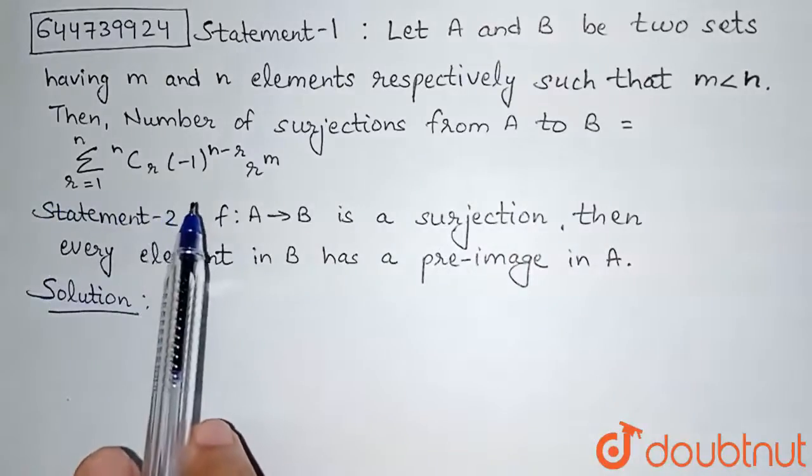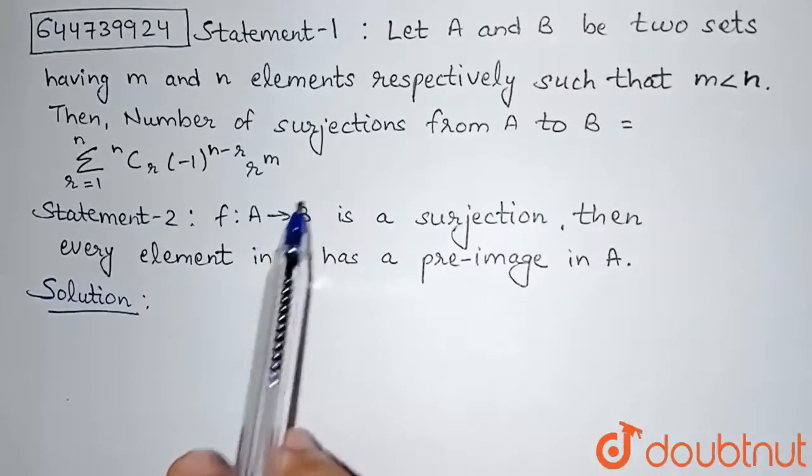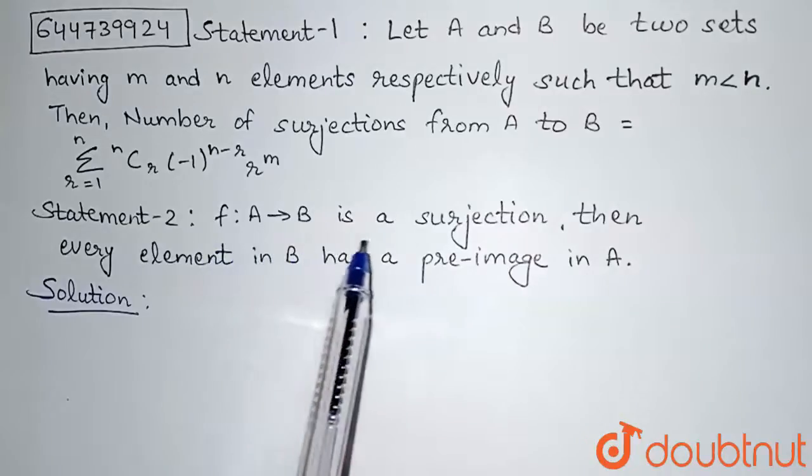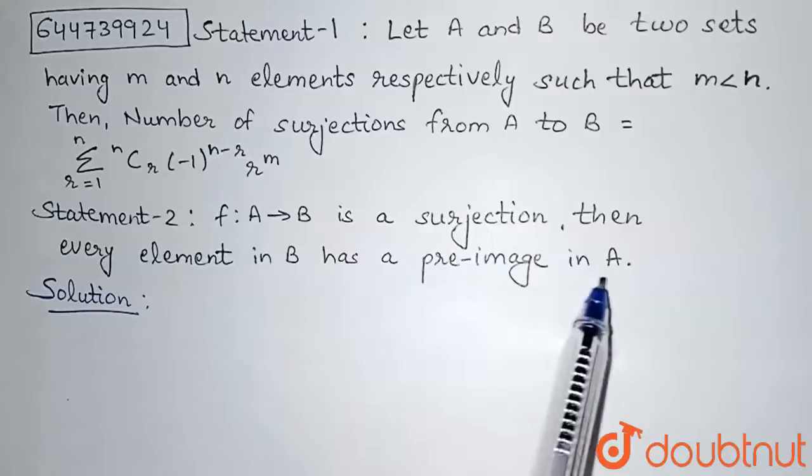NCR into minus 1 to the power N minus R into R to the power M. And statement 2 is a function F from A to B is a surjection. Then every element in B has a pre-image in A.